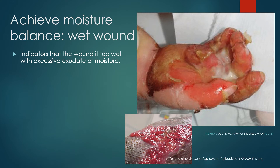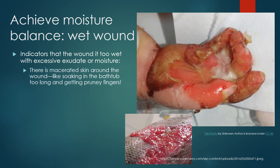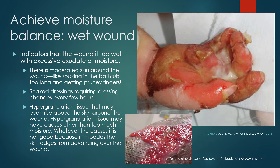Our first goal is to achieve moisture balance. A wet wound has indicators that it is too wet with excessive exudate or moisture: macerated skin around the wound, like soaking in a bathtub too long; soaked dressings requiring dressing changes every few hours; and hypergranulation tissue that may even rise above the skin around the wound. Hypergranulation tissue may have other causes, but whatever the cause, it impairs the skin edge from advancing over the wound bed.